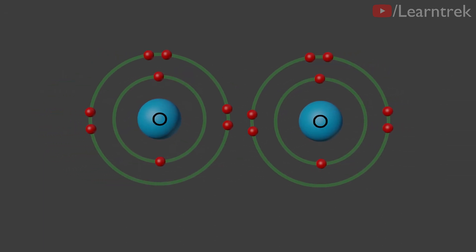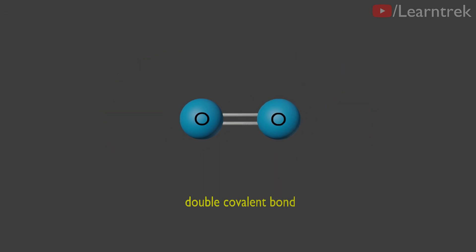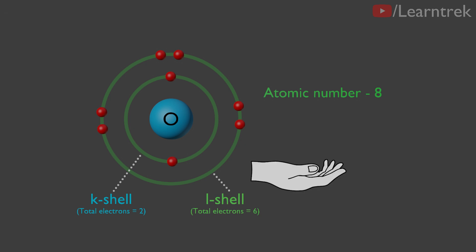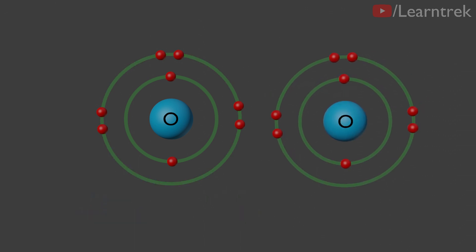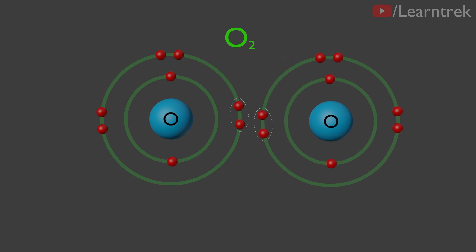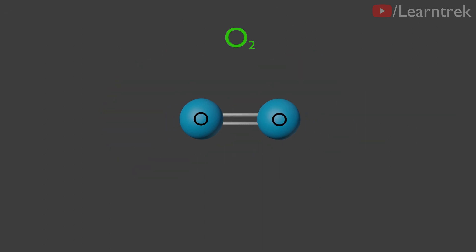If a double pair of electrons, or four electrons, are shared between two atoms, then it is called a double covalent bond, represented by a double line between the two atoms. For example, the oxygen O2 molecule has a double covalent bond between its two oxygen atoms. The atomic number of oxygen is eight; it has two electrons in its K shell and six electrons in its L shell, and it requires two more electrons to fill its L shell. Each atom of oxygen shares two electrons with another atom of oxygen to form O2, giving rise to two shared pairs of electrons forming a double covalent bond.